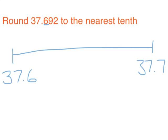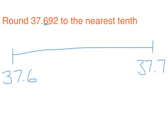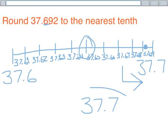I can fill in the hundredths between these two tenths now. Now that I've filled in my number line, I can plot my point. I can see that 37 and 692 thousandths would be just past 37 and 69 hundredths. That's well past my midpoint of 37.65 — it's closer to 37 and 7 tenths. The 9 in the hundredths place showed me that when I round, this number rounds to 37 and 7 tenths.